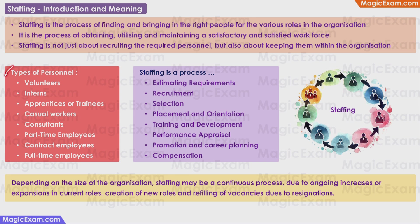Depending on the type and size of the organization, there can be various types of personnel: volunteers, interns, apprentices or trainees, casual workers, consultants, part-time employees, contract employees, and full-time employees. Recruitment is done for all of these different types of personnel.